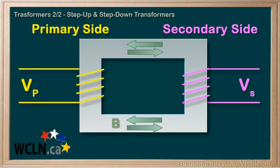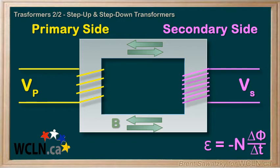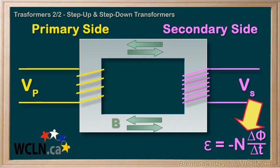Consider: if we increase the number of coils on the secondary side of our transformer, what do you think happens? Well, thinking back to our induced EMF formula, we have a regularly changing flux through the coil — the magnetic field switching back and forth — and recall that N is the number of loops, so each additional loop adds to the overall induced EMF.